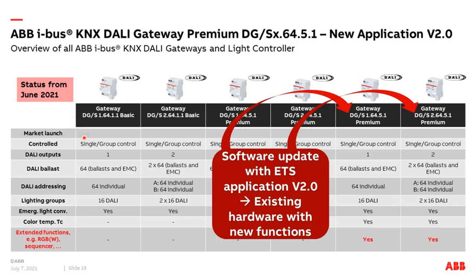In June we launched a new software application version 2.0. Existing DALI gateway Premium devices (one or two-fold, 64.5.1) can be updated from versions 1.0, 1.1, 1.2, 1.3, or 1.4 to version 2.0 via a download. This is really new — using existing hardware and getting more and new functions via an application update. With version 2.0 we have extended functions like DALI device type 8 for RGB and RGBW control, sequencer, load shedding, and more nice features.